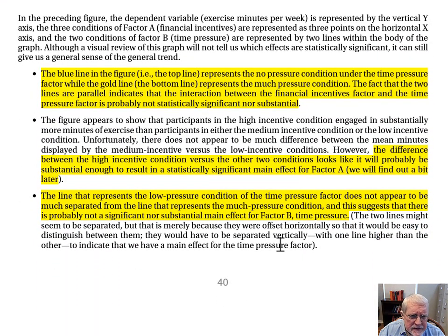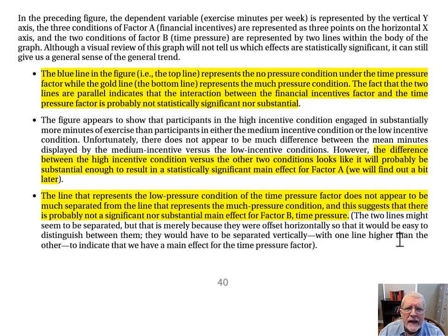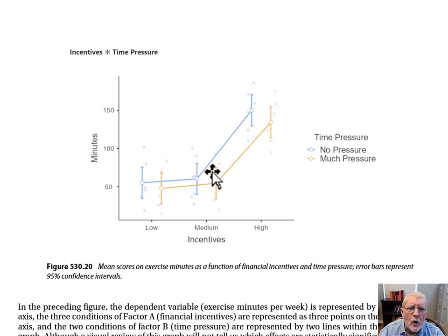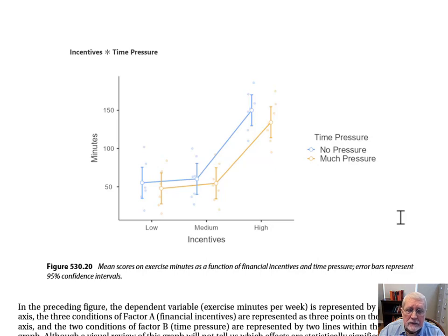Finally, the line that represents the low pressure condition of the time pressure factor does not appear to be much separated from the line that represents the much pressure condition. This suggests there's probably not a significant nor substantial effect for Factor B, time pressure. We have two different lines representing the two conditions under the time pressure factor, and the blue line doesn't look much above the gold line. We'll find out when we look at the F test for that main effect.